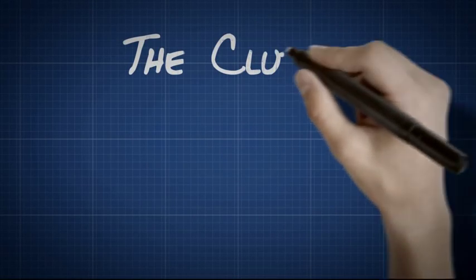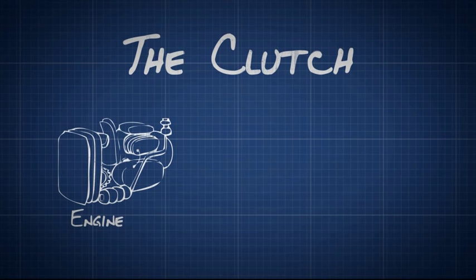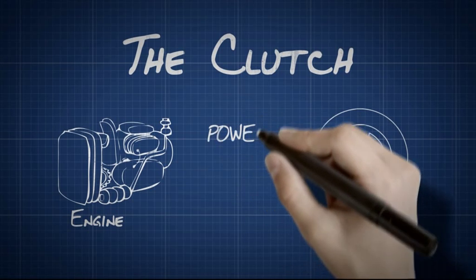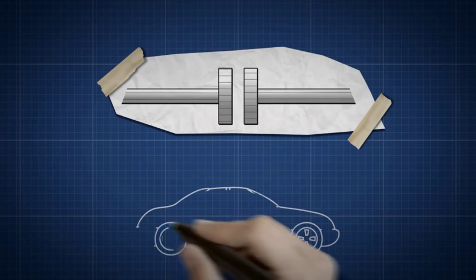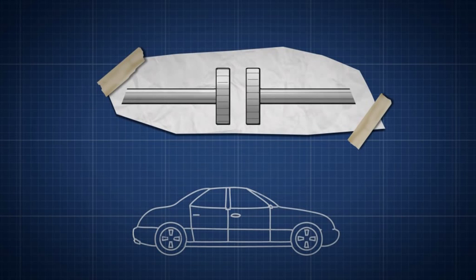A clutch in a car is a way to smoothly transfer power from the engine to the wheels. A clutch has two discs which the clutch pedal can move apart or together.